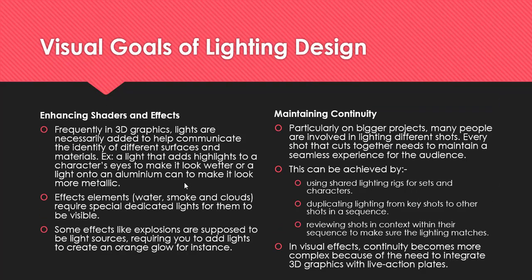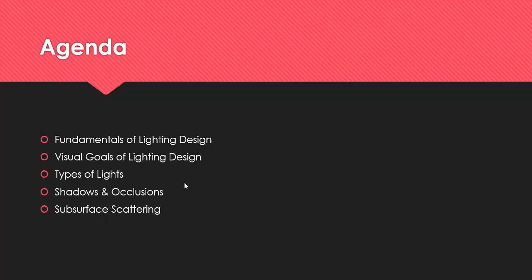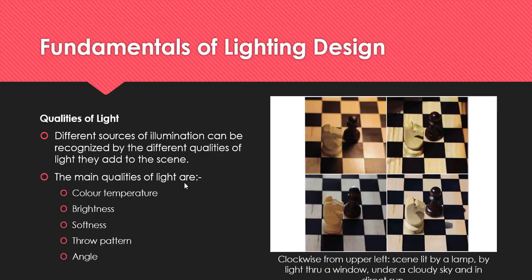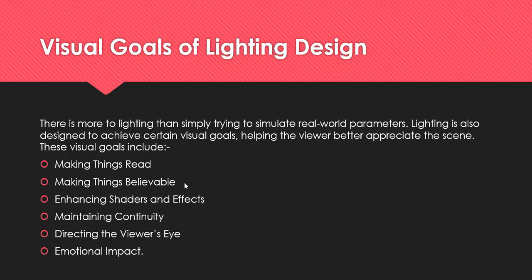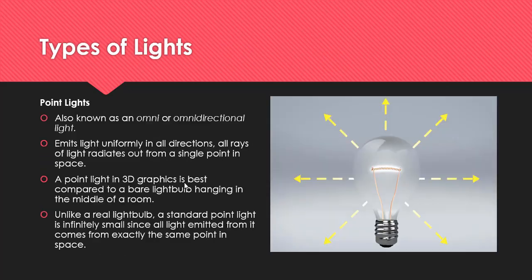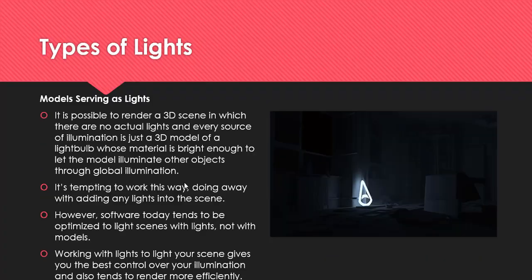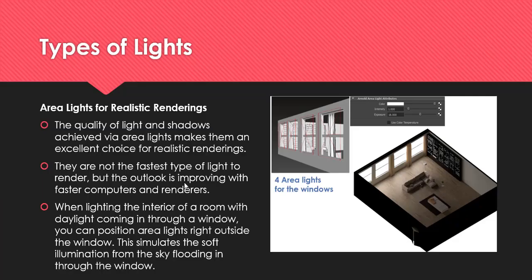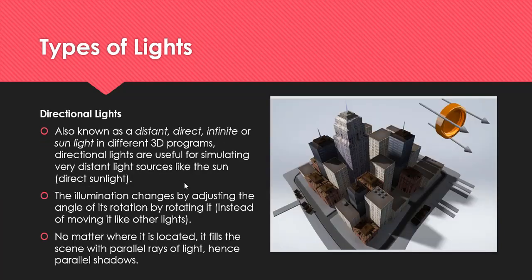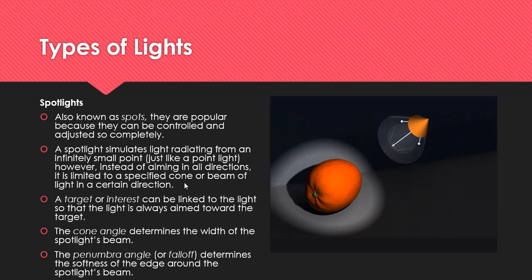That's for Section A. In Section B, the structured questions, we go back to the front — I will ask questions on the visual goals of lighting design. Also, if I ask about lighting I will ask about shadows — the visual functions of shadows. And I'll ask about the different types of light again in Section B.